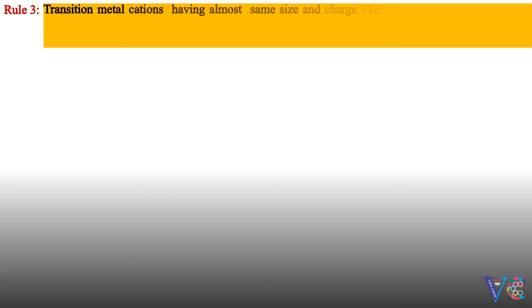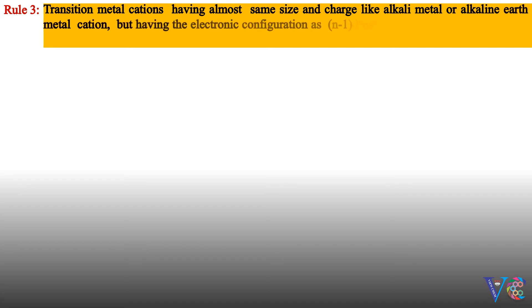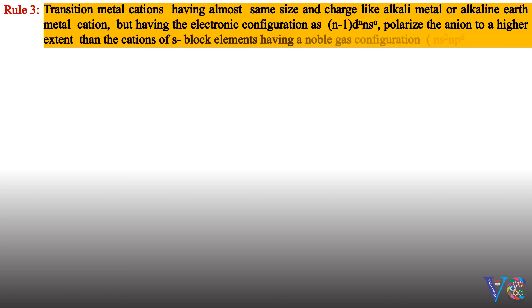Rule 3: Transition metal cations having almost same size and charge like alkali metal or alkaline earth metal cation but having the electronic configuration as (n-1)d^N ns^0, polarize the anion to a higher extent than the cations of s-block elements having a noble gas configuration, that is ns^2, np^6.